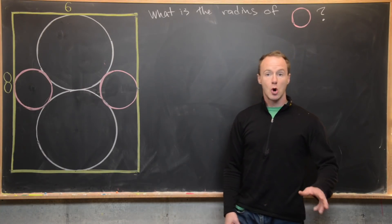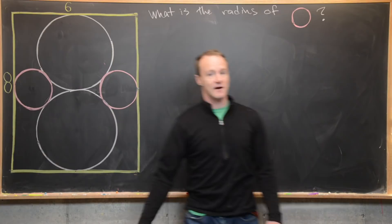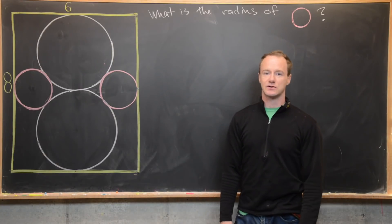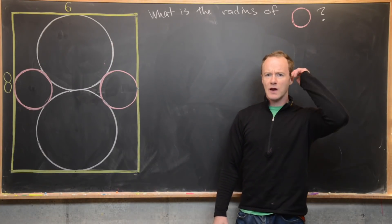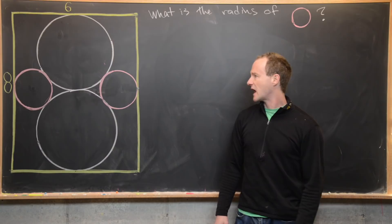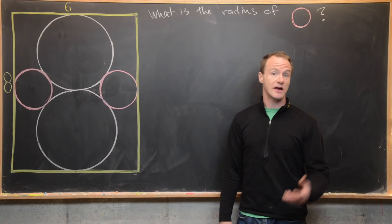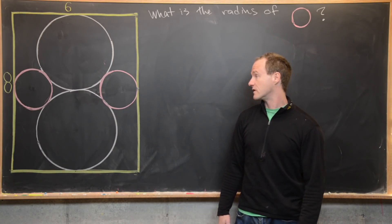Our goal is to find the radius of the pink circle. We can do that by introducing a right triangle and then using the Pythagorean theorem.